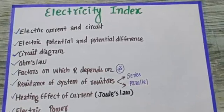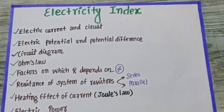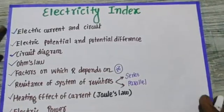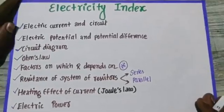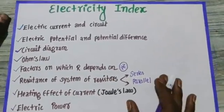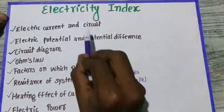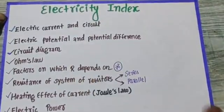We will be doing all the index questions and exercise questions one by one along with the topics which we are doing. First, we will see what topics are. First, we will see electric current and circuit. Electric current definition is a formula, but circuit is a definition.